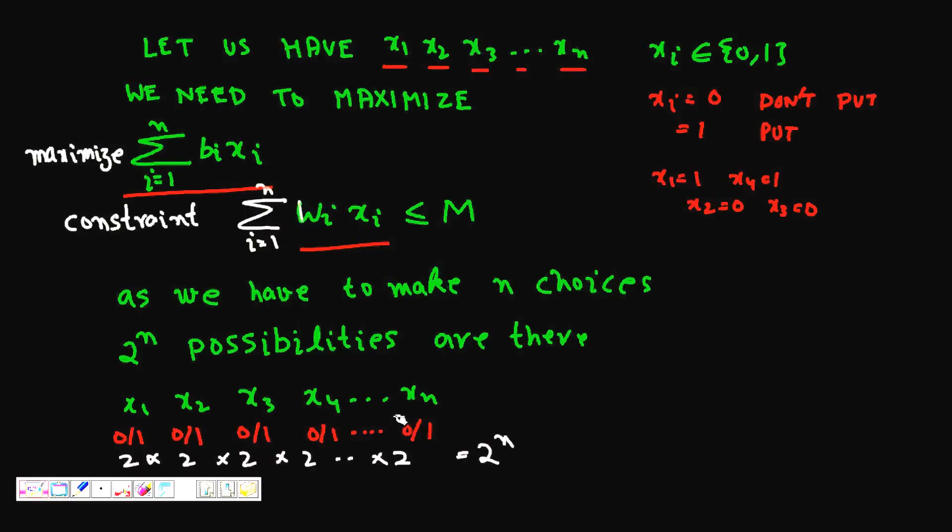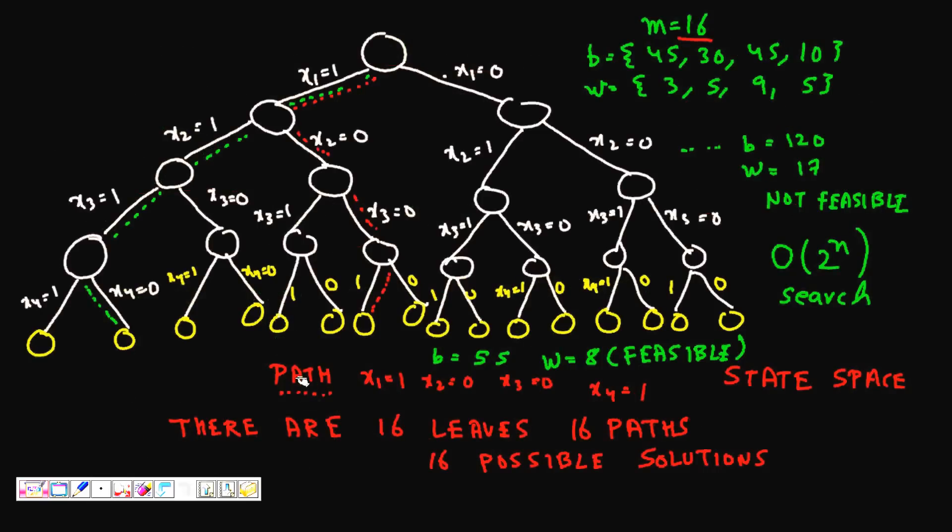You have basically 2^n possibilities if there are n items. Of course this becomes exponential in terms of the selections and it is hard to solve. We now look at state space diagram. It basically represents a tree where you need to search. We start at the root of this tree.